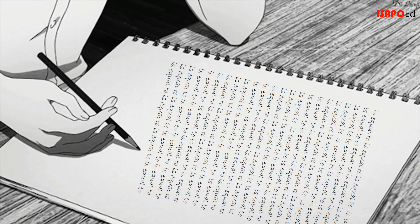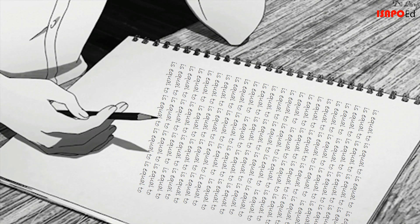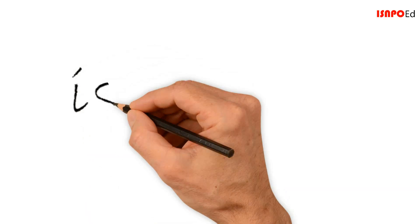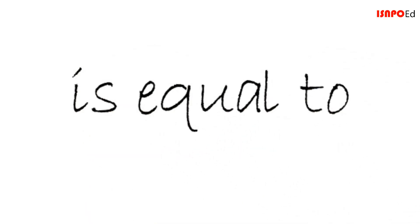But he was getting tired of writing the words 'is equal to' over and over. He replaced those words with two horizontal line segments because the way he saw it, no two things can be more equal.